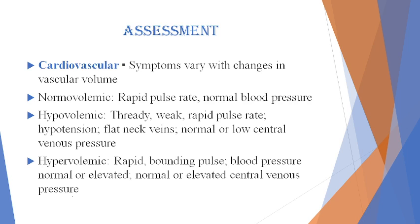What are the symptoms and assessments? In cardiovascular symptoms, there is varying vascular volume. In case of normovolemic, there is a rapid pulse rate and normal blood pressure. In case of hypovolemic — meaning decreased fluid — the pulse is thready, weak, and rapid. There is hypotension, flat neck veins, and normal or low central venous pressure. In hypervolemic, there is a rapid bounding pulse, and normal or elevated central venous pressure.